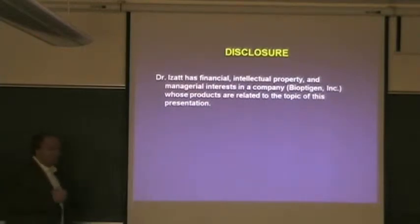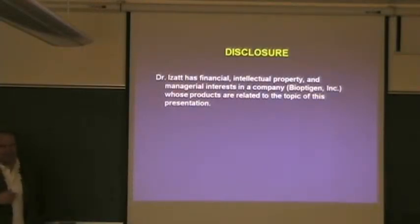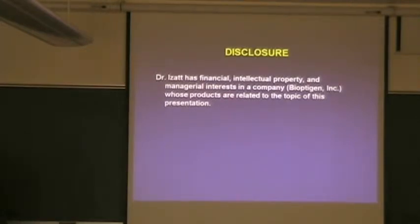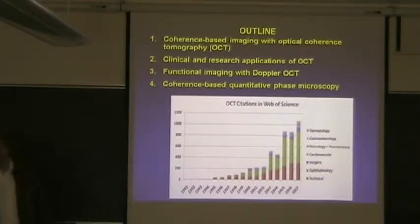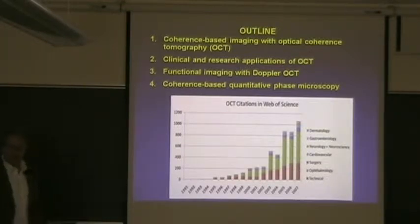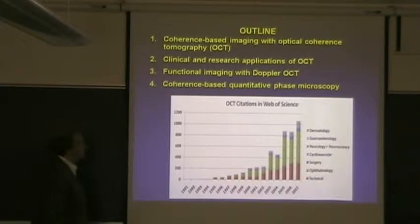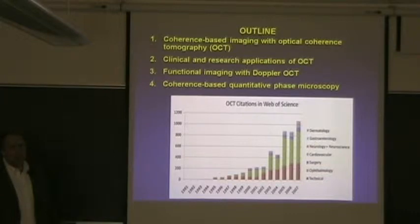My university requires me to disclose that I have a proprietary interest in some of what I'm talking about. I'm a co-founder of a company whose products are related to some of what I'm going to talk about today. I won't be secretive about that at all. So I'll talk first about the basis of coherence-based imaging in highly scattering tissues, how this has turned into a fairly successful clinical imaging application in OCT, how that has advanced to the point where it's been commercialized and commoditized, and so we need other things to do — moving on to functional imaging and other aspects of coherence imaging.